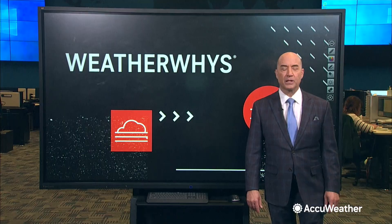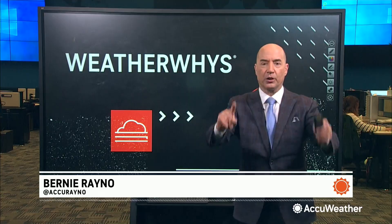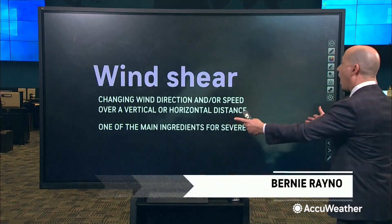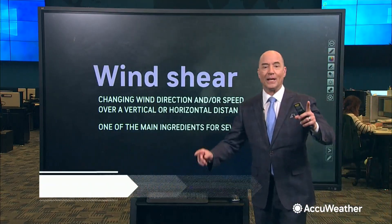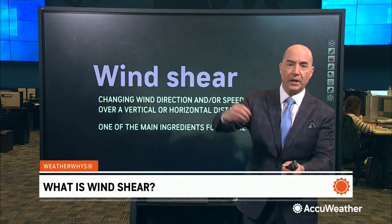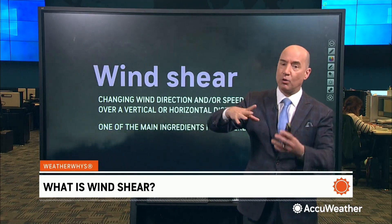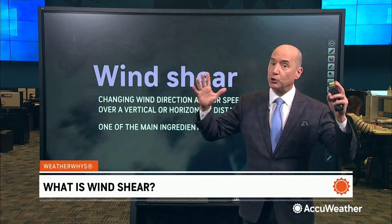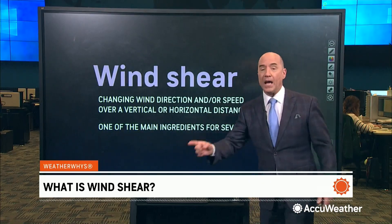In today's WeatherWise segment, where we take something difficult in the world of meteorology and make it easy to understand, we're going to talk about wind shear. It's the changing of wind speed and wind direction, or both, with height, and it's one of the main ingredients for severe weather.